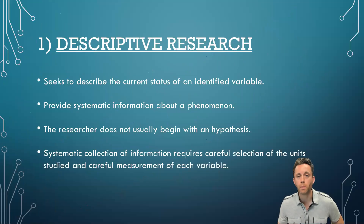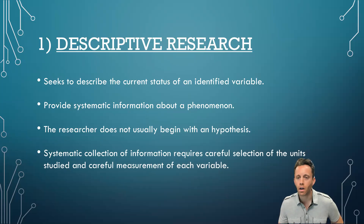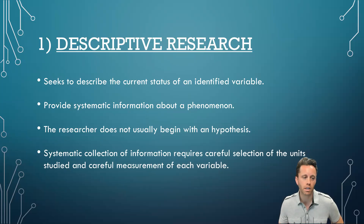The first type is a descriptive research design, and that really seeks to describe a particular identified variable. For instance, you might have second graders and want to know how they spend their time during the summer vacation, or a description of how parents feel about the COVID-19 school year. In these situations, you wouldn't formulate a hypothesis. You would be trying to think about systematic information about a particular phenomenon, and the collection of information requires careful selection of particular units and variables that you're going to be measuring.